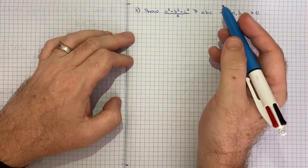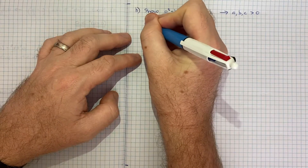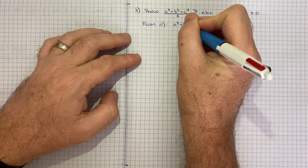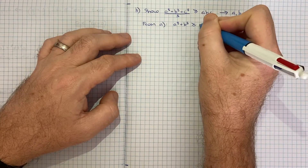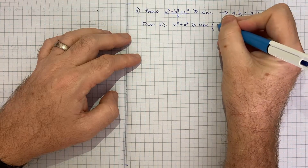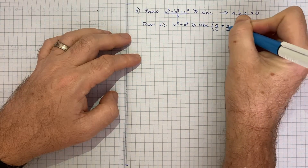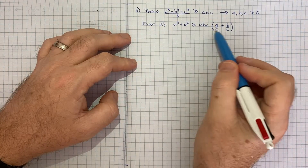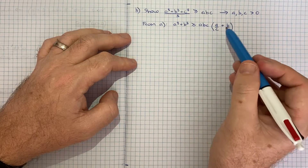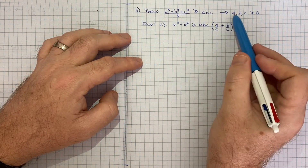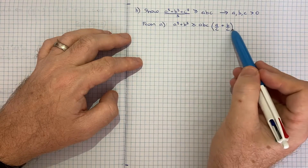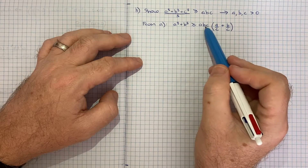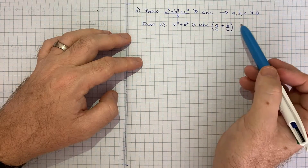The use of the word 'hence' indicates that we should rely on what we showed in part A. From part A, we know that a³ + b³ ≥ abc · (a/c + b/c). The key to this question is realizing that this result is true for any combination of letters — a³ + b³, a³ + c³, or b³ + c³ — wherever you see a and b, you just substitute the relevant letters.